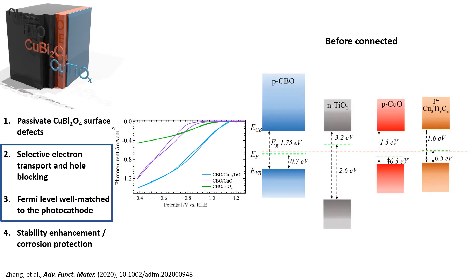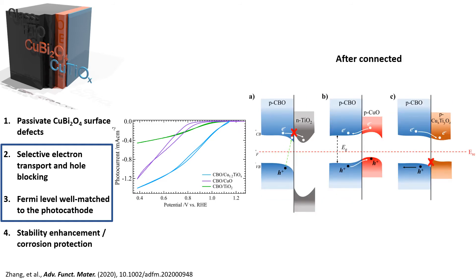We created sputtered coatings of copper oxide, titanium dioxide, and the ideal ratio to copper titanium oxide, and again determined their band energetics by XPS and optical spectroscopy. After connecting the layers and aligning the fermi levels, we can again see that TiO2 is blocking two electrons. Copper oxide is better suited for transporting holes, which is also what we observed in that spin coating study I referred to earlier in the talk, but copper titanium oxide had a tailored fermi level that was well matched to that of CBO, resulting in an ideal conduction band alignment allowing for electron transport while blocking holes.